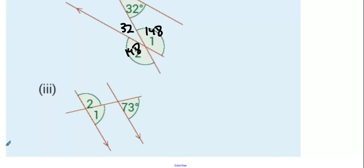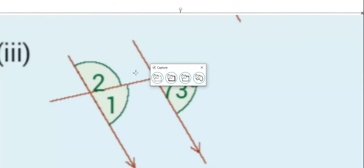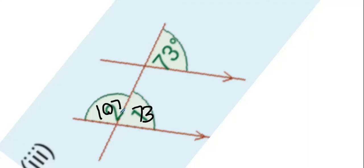All right guys, next one. Anybody see any corresponding angles, which is an F, is what I'm looking for here? You guys always have the luxury of grabbing your copy and tilting it, and when you tilt it you can see the F quite clearly. So that would be 73, reason why corresponding. And then the number two, 107, because it has to add to 180.